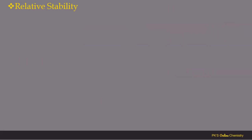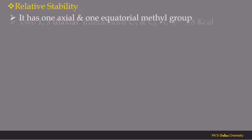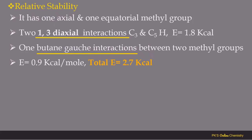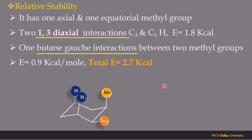Now let's discuss the relative stability or relative energy of the conformations. In cis-1,2-dimethylcyclohexane there is one axial and one equatorial methyl group. Whenever a substituent occupies an axial position, it produces two 1,3-diaxial interactions. The axial methyl group at C1 interacts with hydrogen atoms at C3 and C5, giving two 1,3-diaxial interactions with a total energy contribution of 1.8 kcal/mol. Additionally, the two methyl groups are gauche to each other, increasing the energy by a further 0.9 kcal/mol.